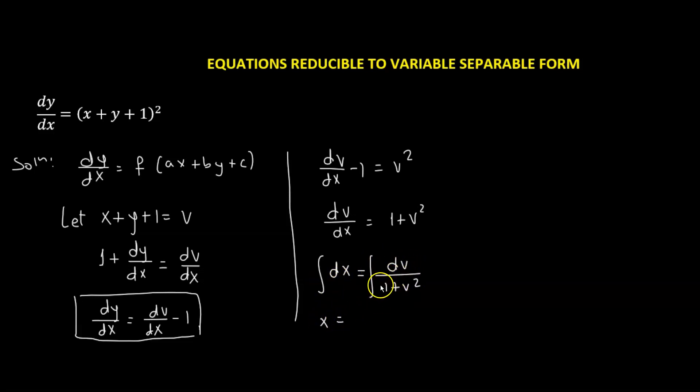and if we look at the table of integrals, integration of dv over 1 plus v squared will be the tangent inverse or the arctangent of v, plus the constant of integration c.